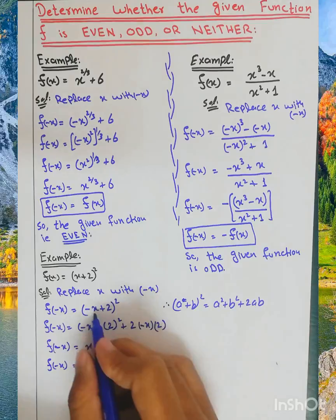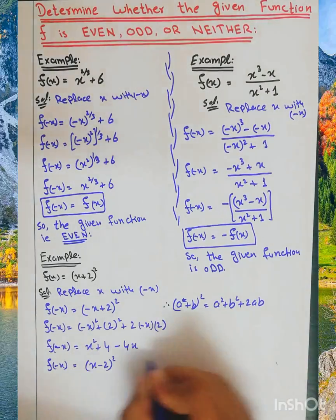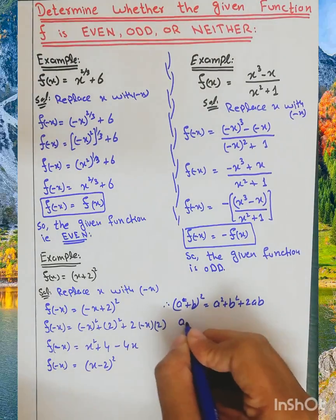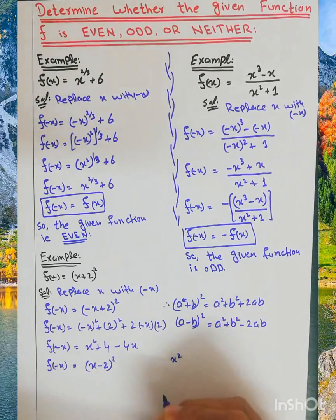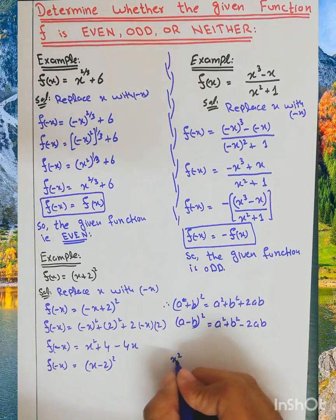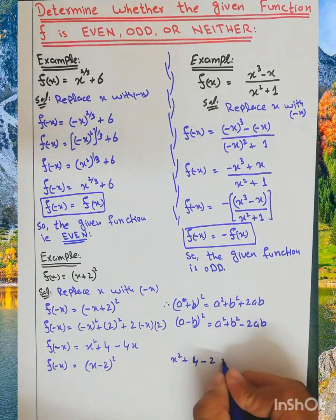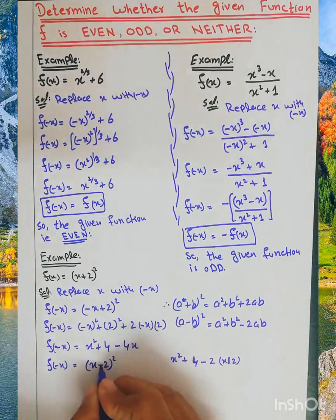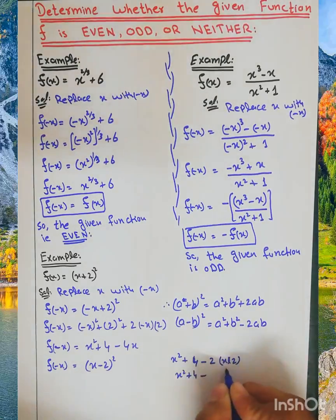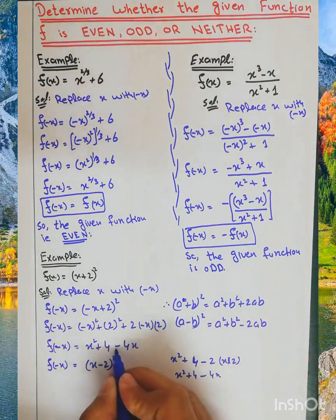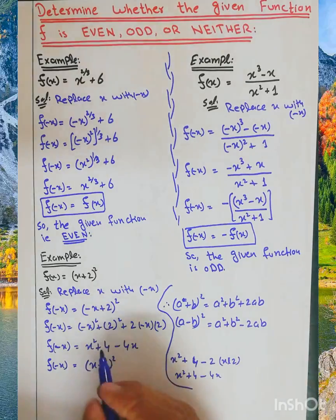If we close this, we get x minus 2 whole square. We open it using the formula: a minus b whole square equals a squared plus b squared minus 2ab. So we get x squared plus 4 minus 4x, which matches our expanded result.